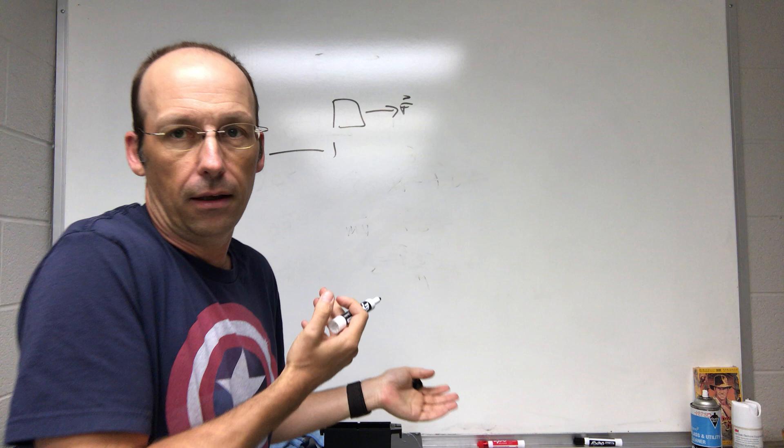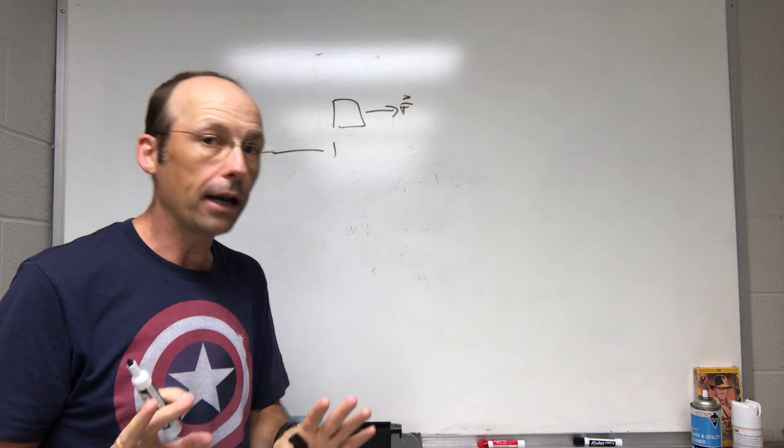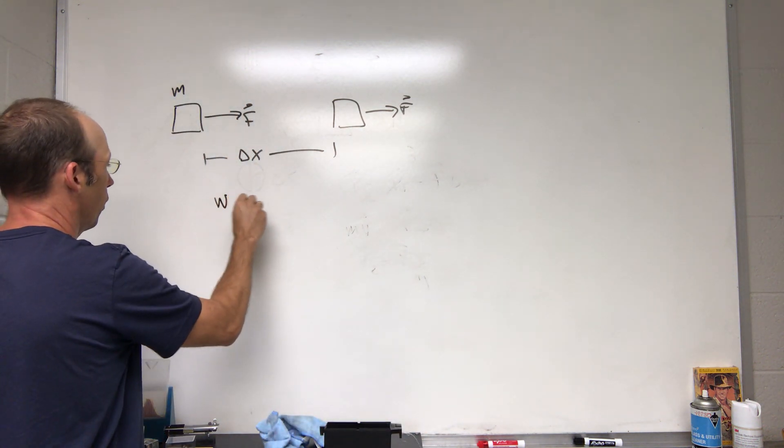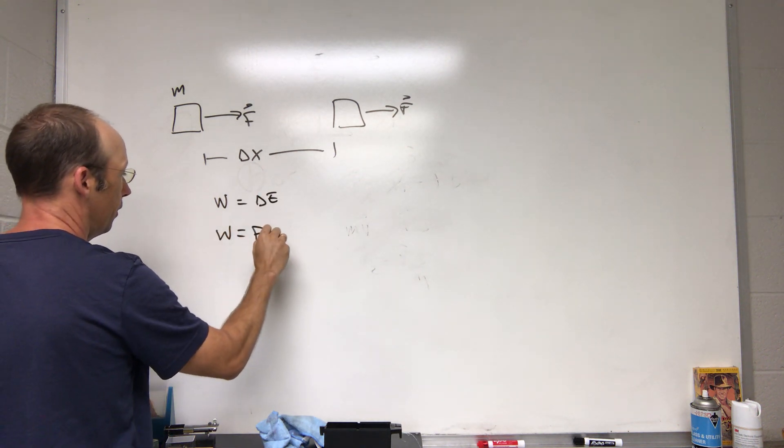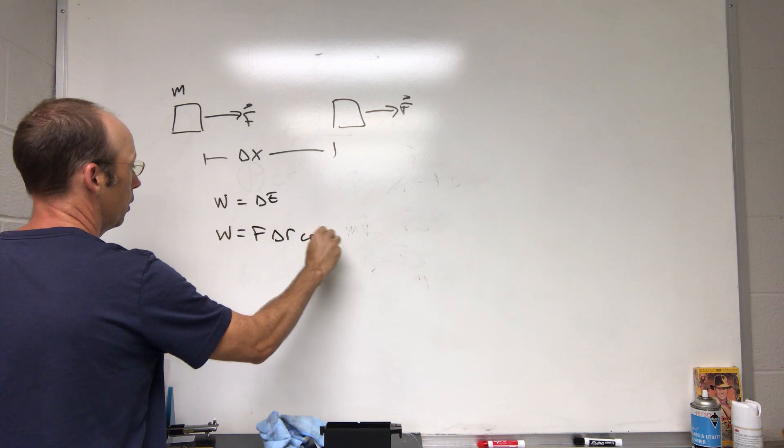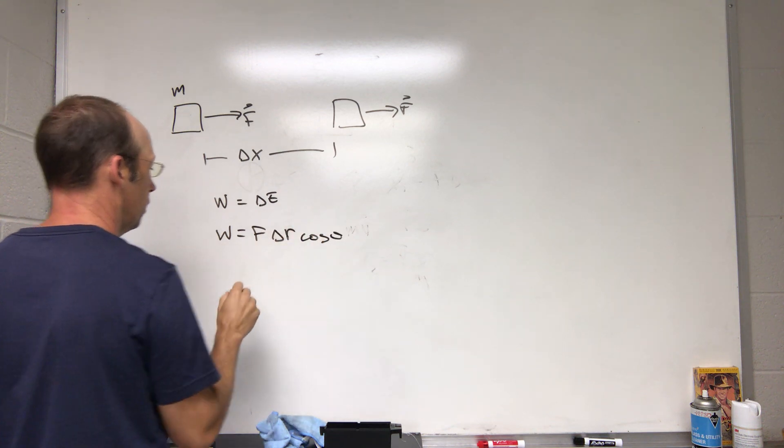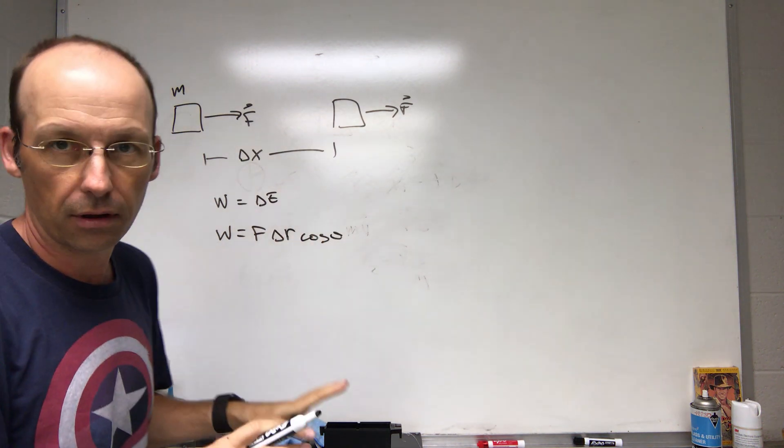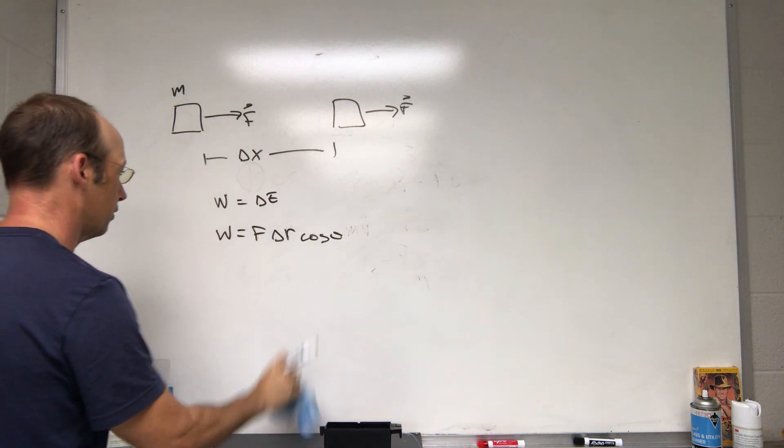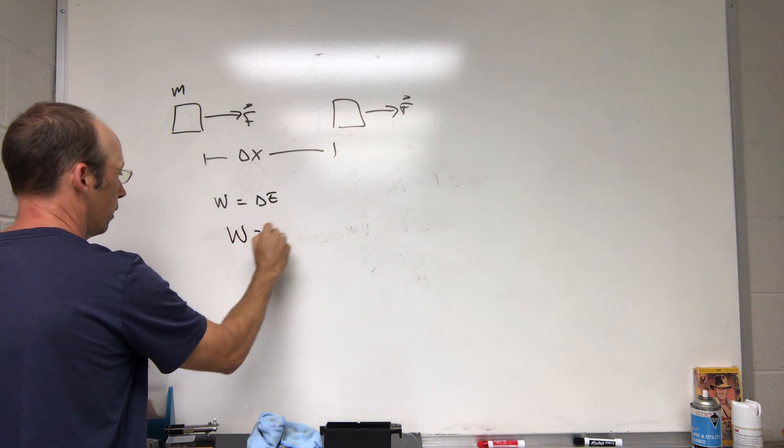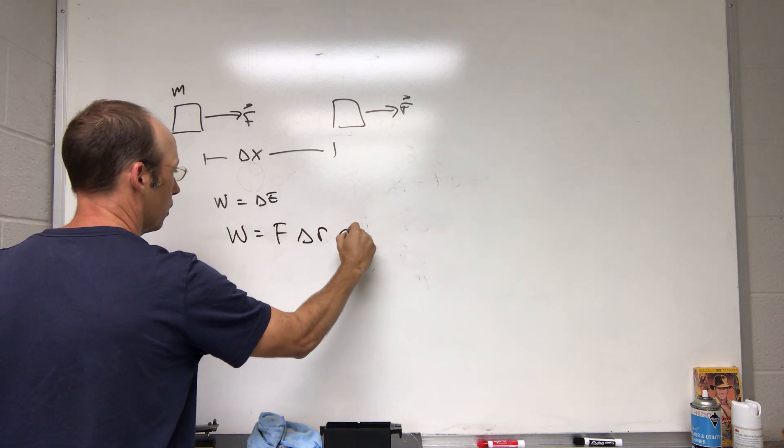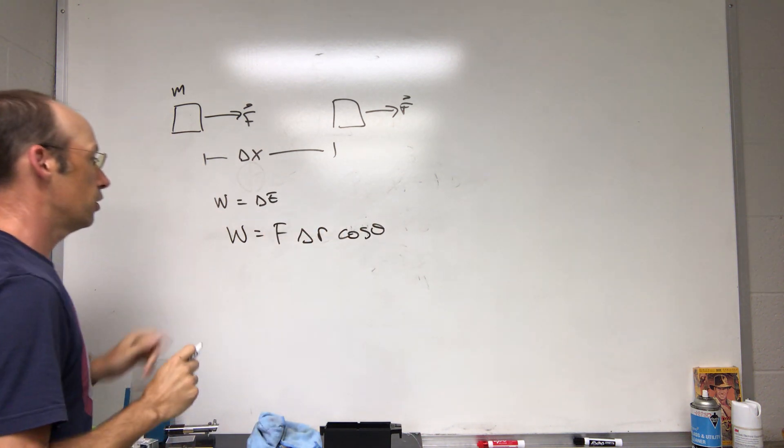I could indeed calculate that time and do the same thing, but it's a little more involved. So now we can use the work-energy principle. This says work is a change in energy, or work is F Delta r cosine theta. So work is F Delta r cosine theta.